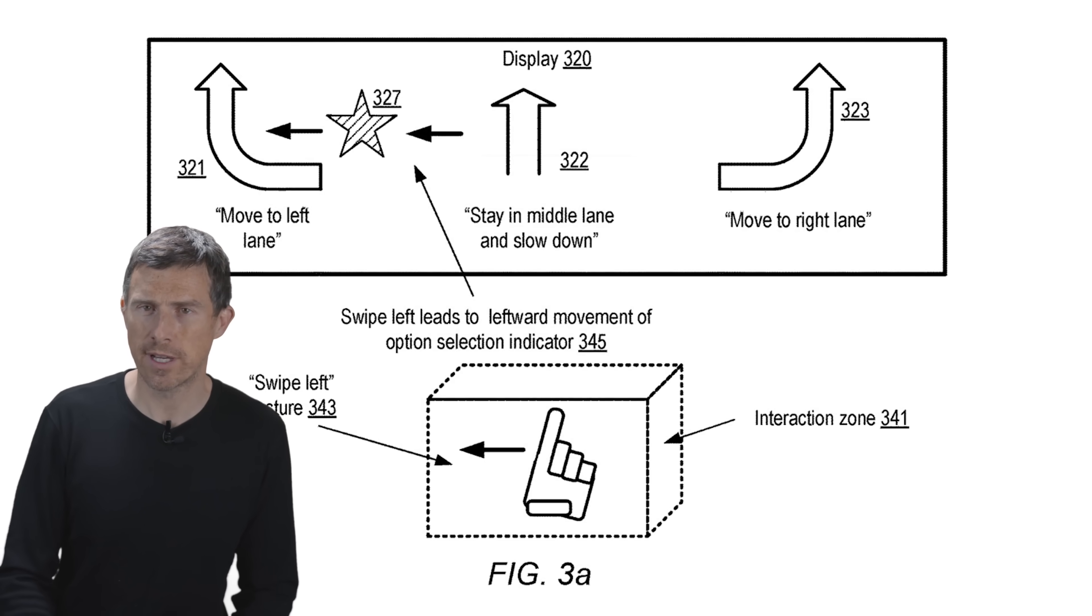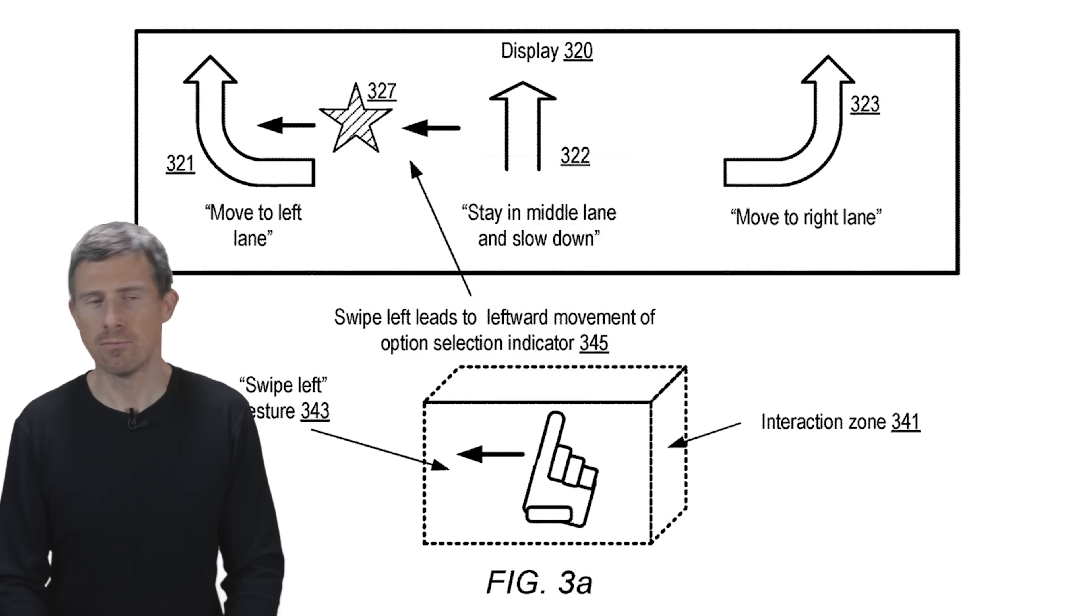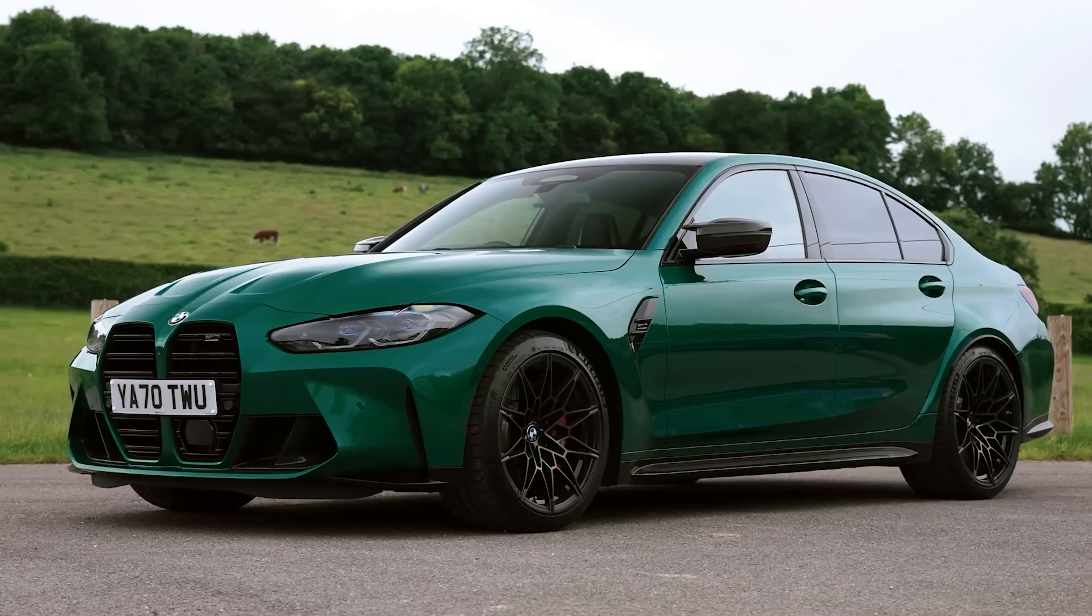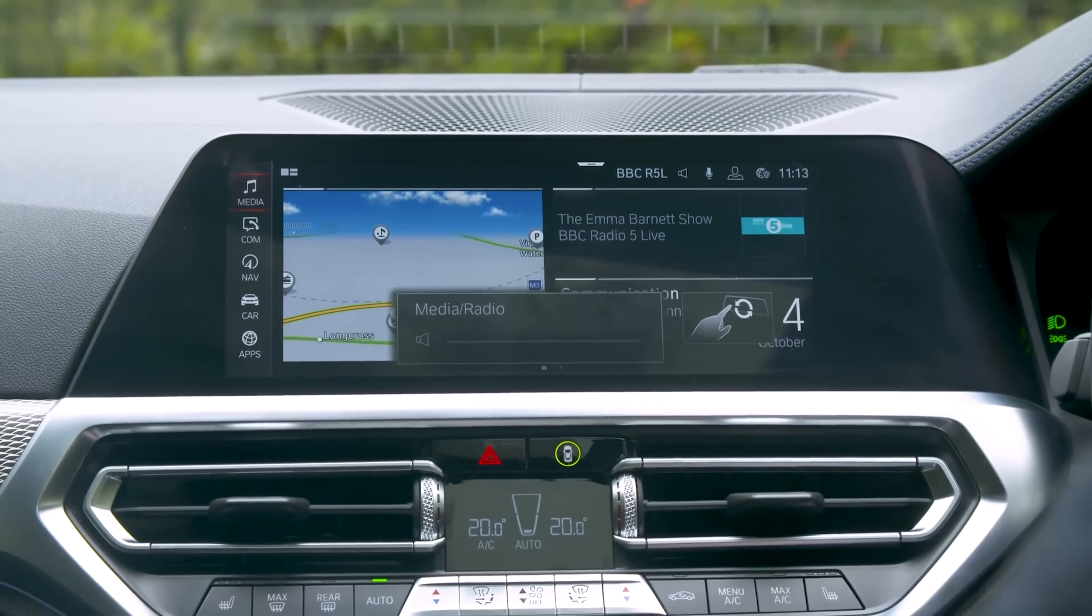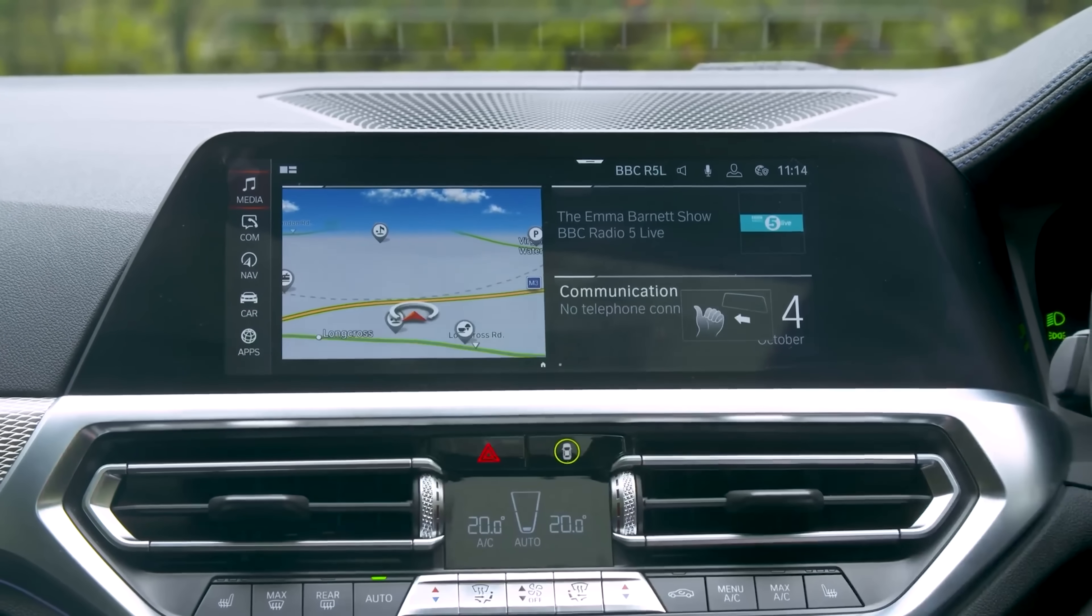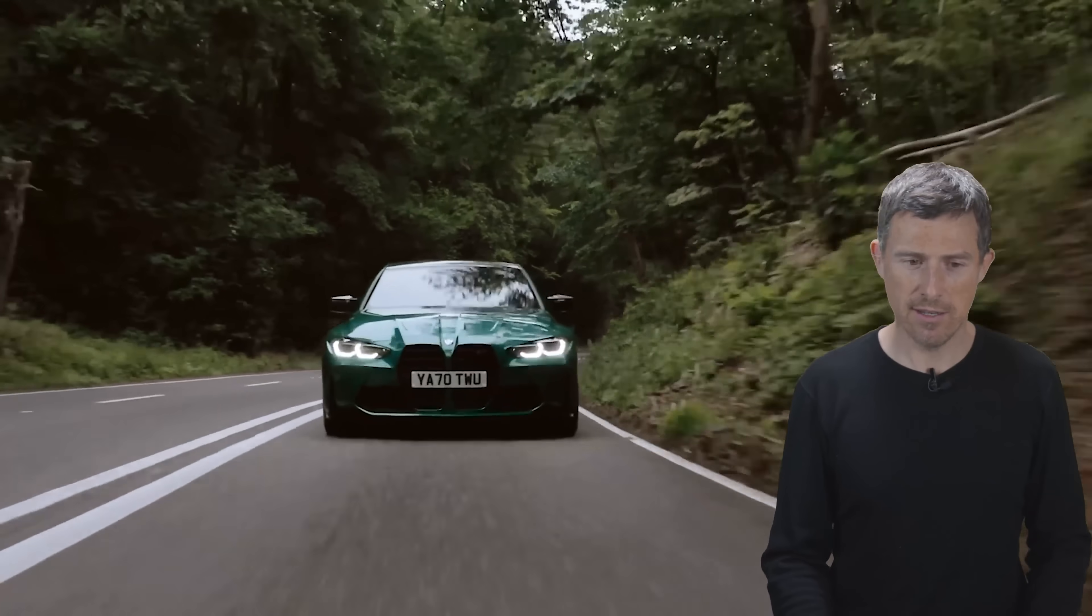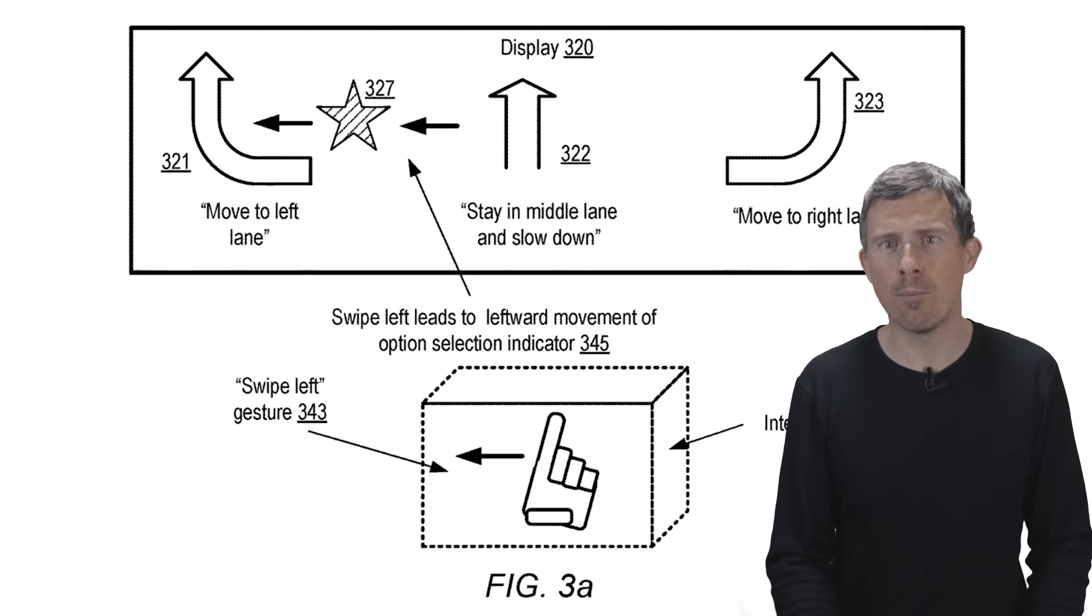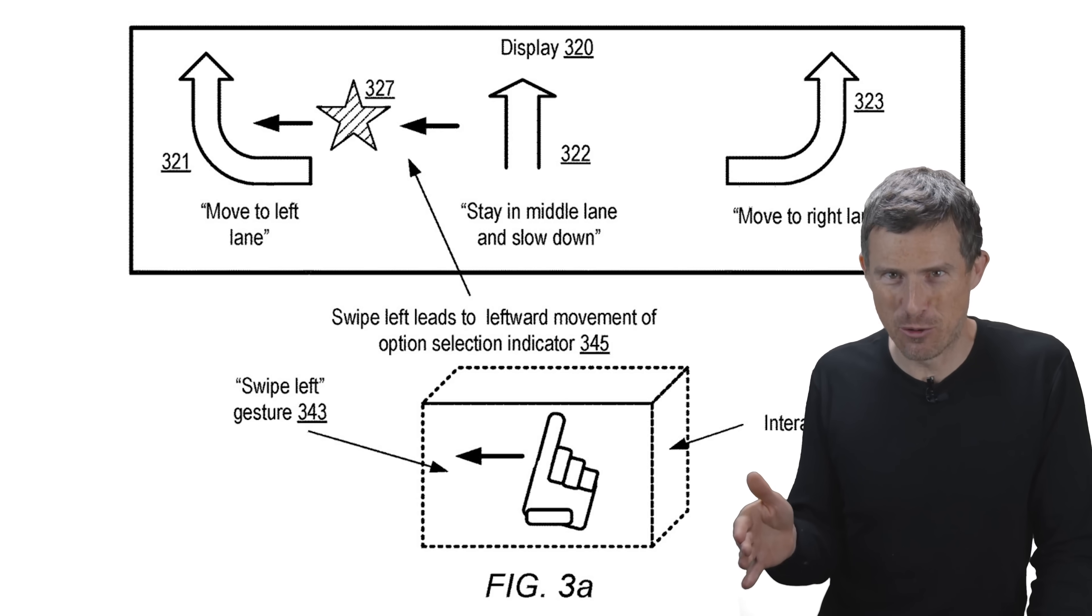Have a look at this next patent drawing. You see what that is? It actually relates to gesture controls. Nothing new I hear you say. BMW has been doing it for ages and indeed my M3 has gesture controls so I use it for increasing and decreasing the volume and for dismissing or accepting a phone call. The only problem with the BMW system is that sometimes you scratch your head and it'll change the music track or something like that which is a bit annoying. Hopefully Apple can make it work better especially considering what they're planning on doing with it.